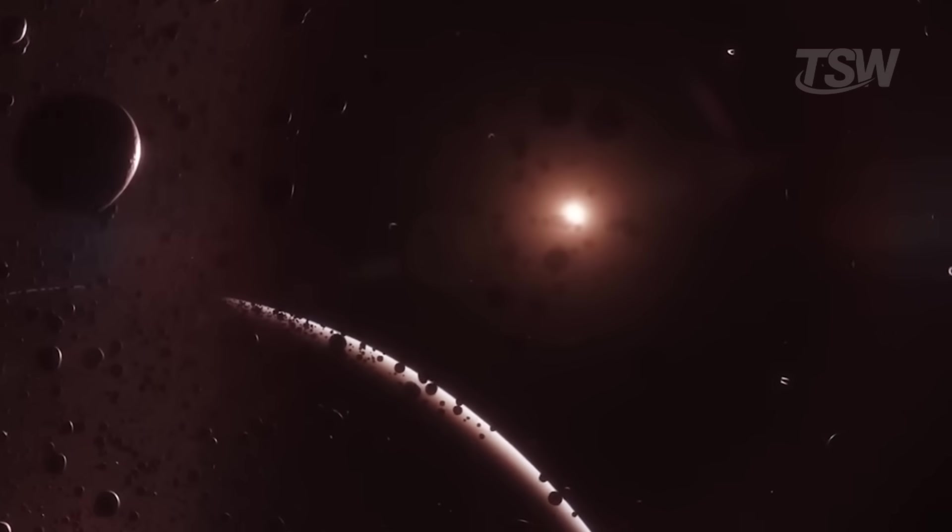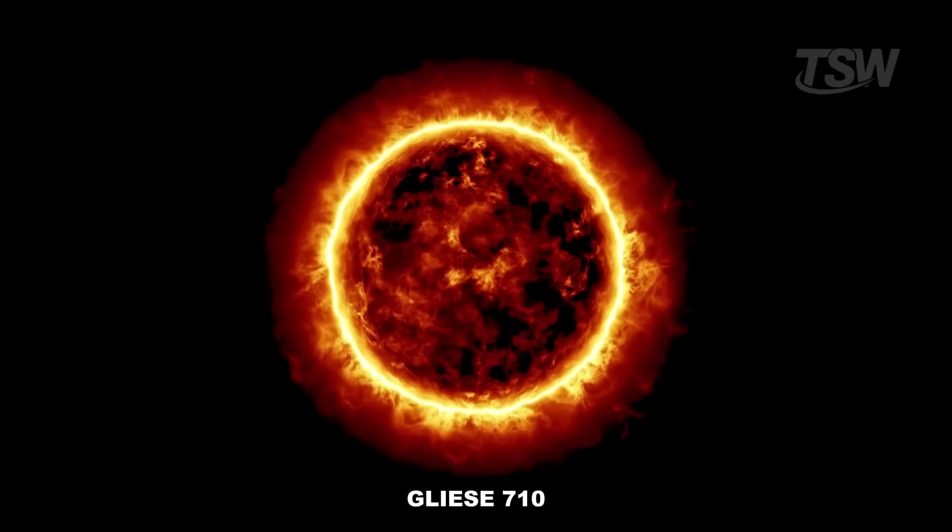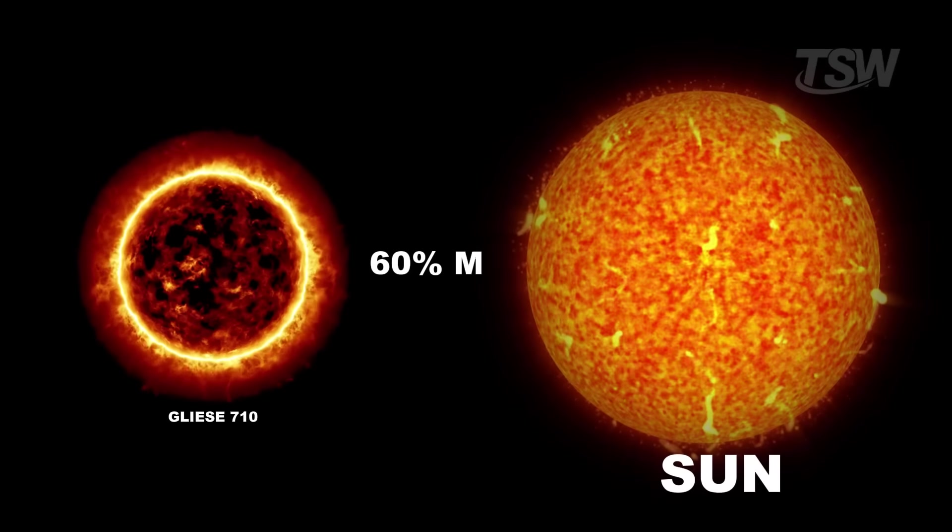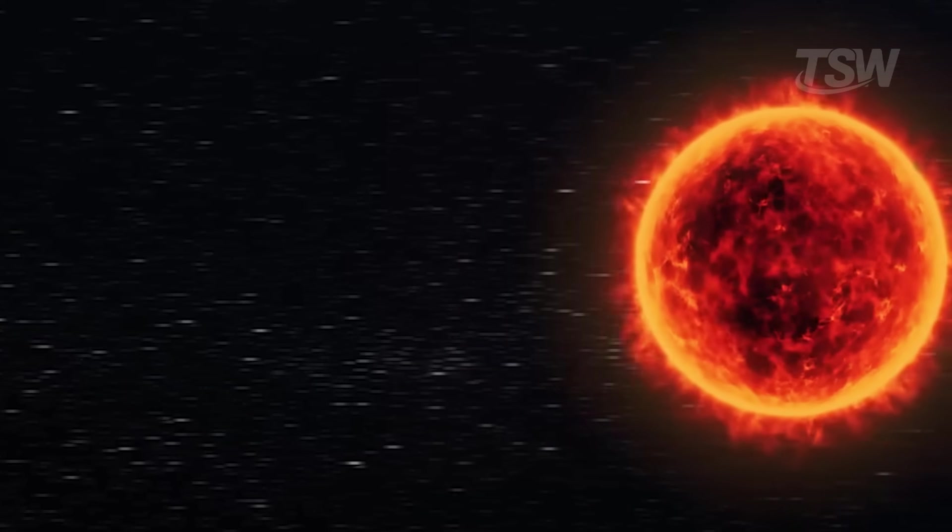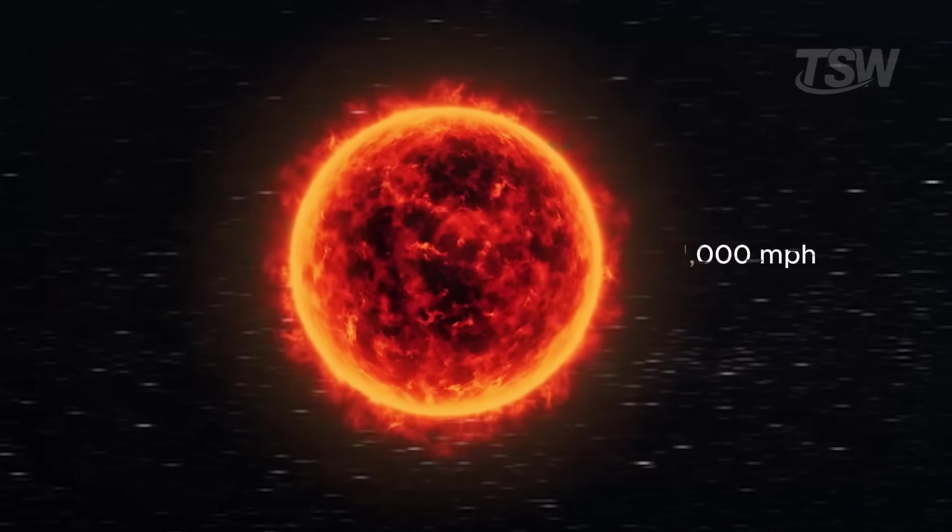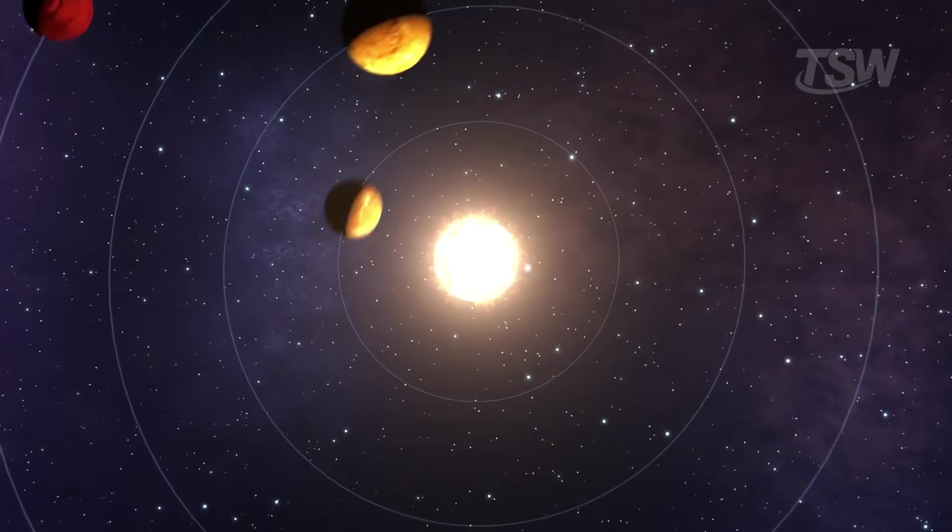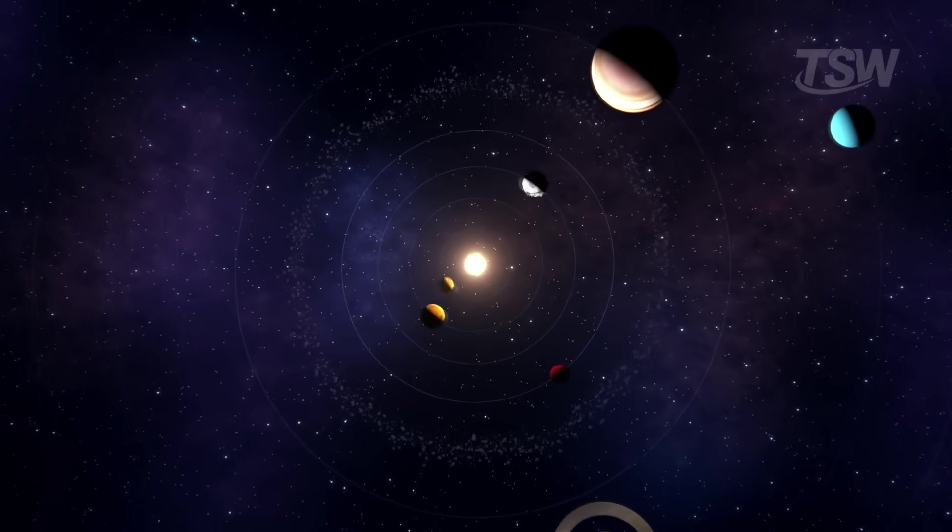Gliese 710, however, promises a far less discrete performance. Classified as an orange dwarf, it has roughly 60% of the Sun's mass. In other words, it's larger and more luminous than Schultz's star. And it travels through the galaxy at about 50,000 kilometers per hour. That's not fast enough to escape the Milky Way, but it's enough that in approximately 1.2 million years, it will cross the outer reaches of our system.